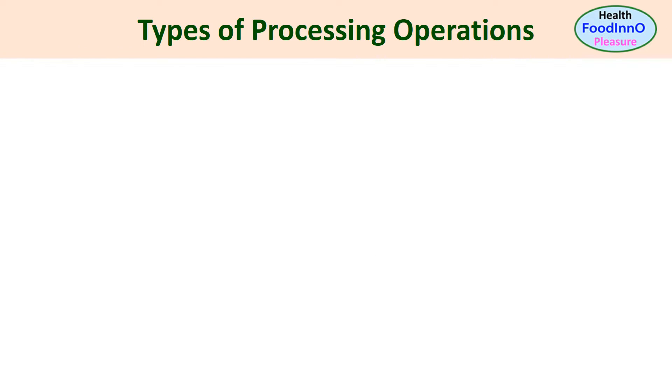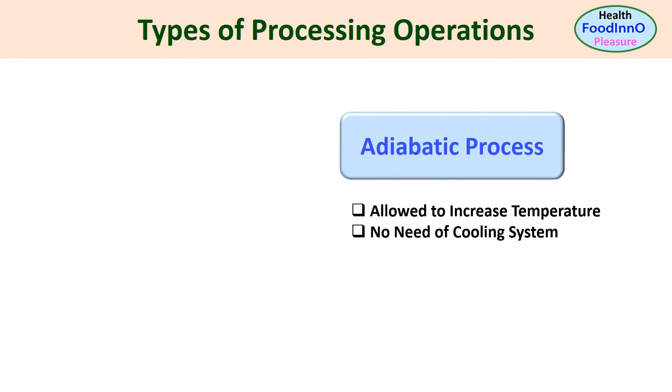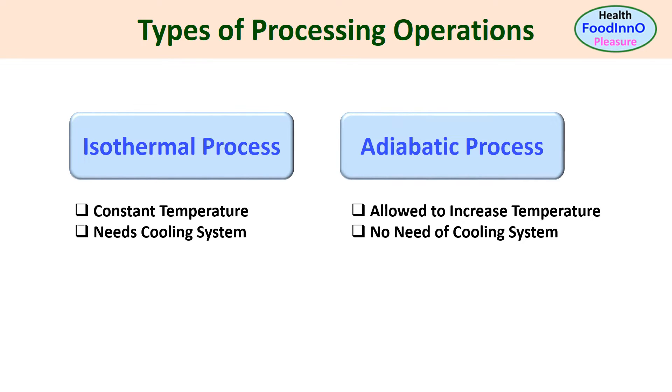In addition, we need to decide whether we will operate at adiabatic or isothermal. In an adiabatic process, it could be allowed to increase the temperature with minimum heat loss, whereas in isothermal process we need to keep temperature constant, so a cooling system is required.